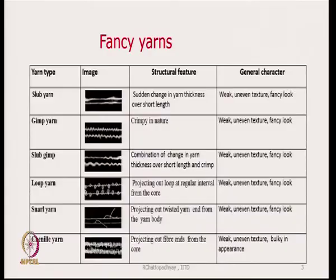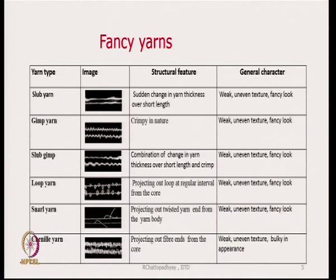On the fancy yarn side, there are many types produced by the industry — slab yarn, gimp yarns, slab-and-gimp combinations, loop yarns, and snarl yarns. Fancy basically means they affect the aesthetic aspects of the fabric. When you want to enhance the aesthetic aspect of a fabric or garment, these are the yarns to be used. There are so many types of fancy yarns available.